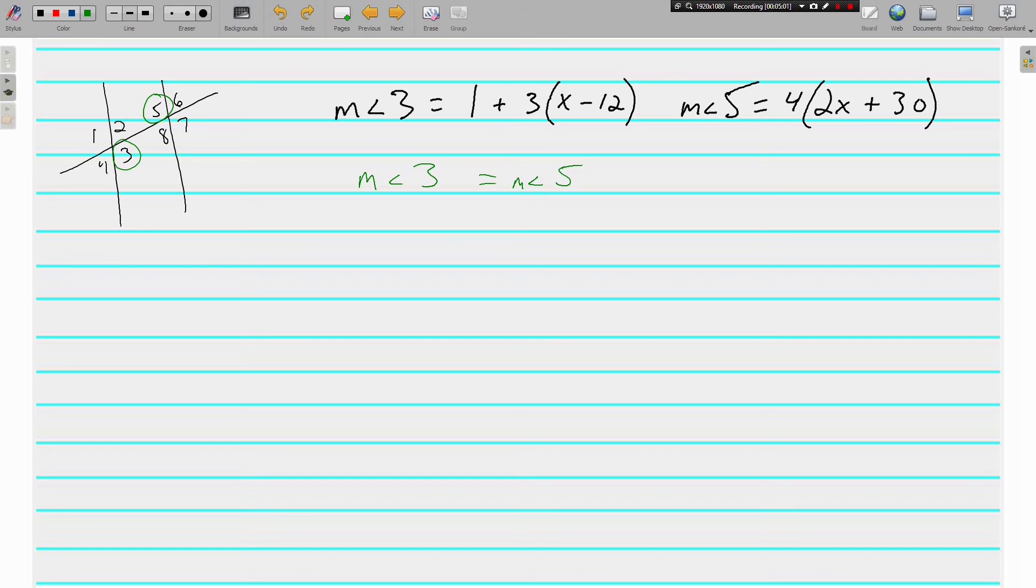And this one looks kind of ugly. That's okay. Let's just jump in. Angle 3 is 1 plus 3 times the quantity of x minus 12. And angle 5 is 4 times the quantity of 2x plus 30.